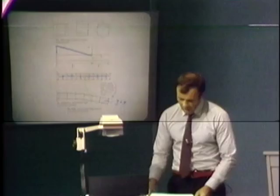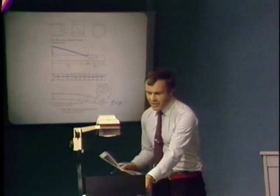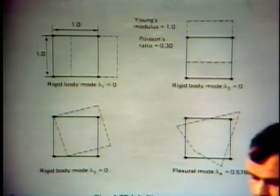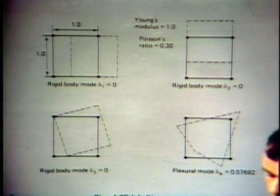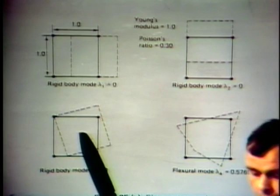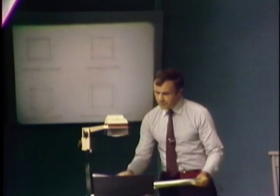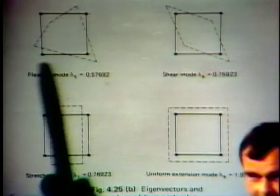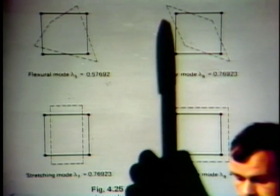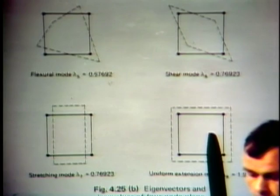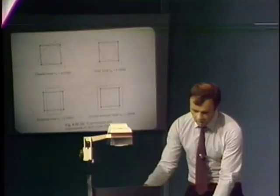For a four-node plane stress element, we calculate the eigenvalues. The lowest three eigenvalues are zero — representing the three rigid body modes. The fourth eigenvalue corresponds to a flexural mode, the fifth to another flexural mode, the sixth to a constant shear mode, and the remaining two correspond to constant compression and tension modes. These are the constant strain states that the element can represent. Therefore, this element satisfies both criteria — the rigid body mode condition and the constant strain condition.